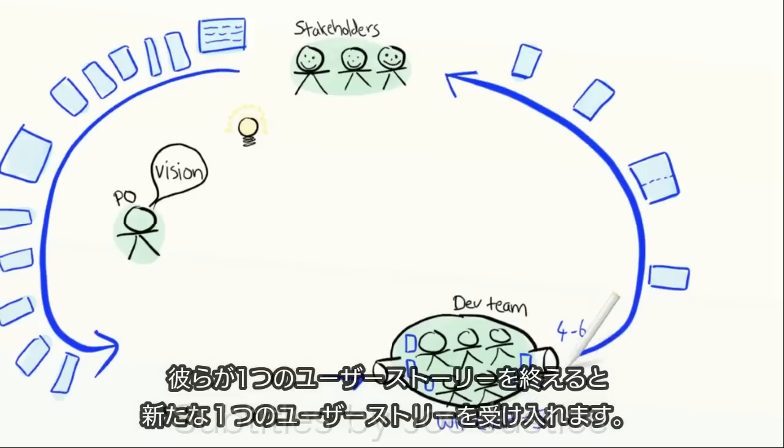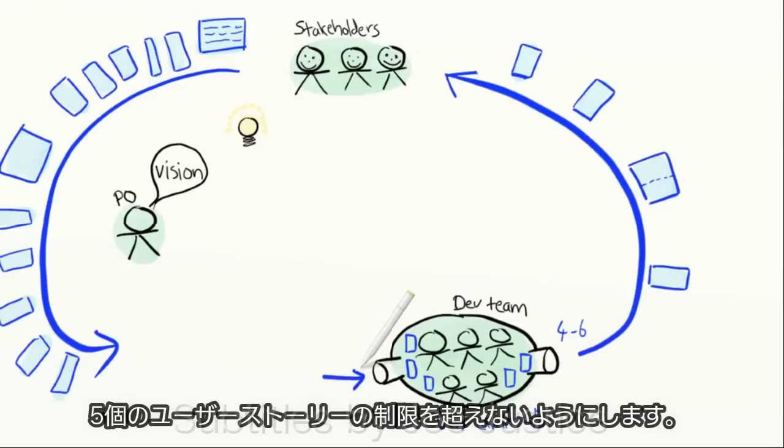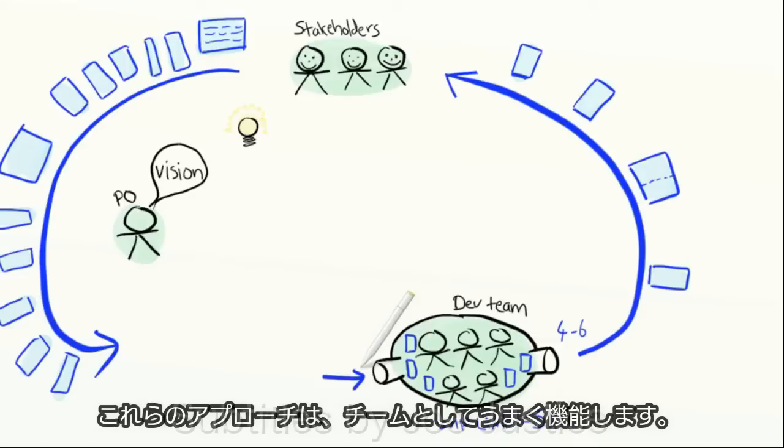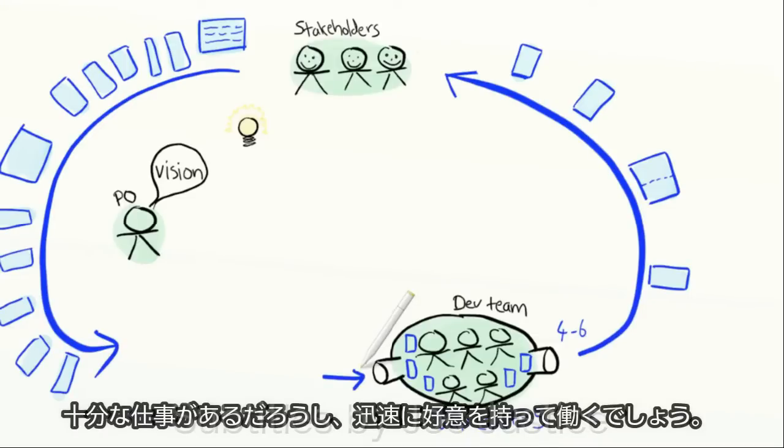Whenever they finish one story, they'll accept one new story, thereby making sure that they never break the limit of five ongoing stories. Both of these approaches work fine, in the sense that the team will have just enough work to do, and they'll be able to work fast and effectively.